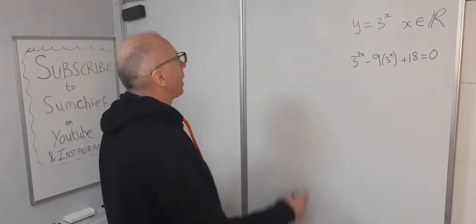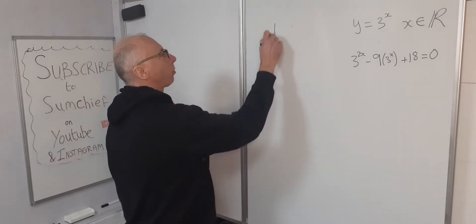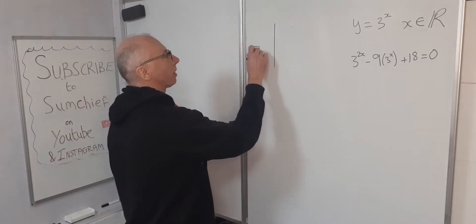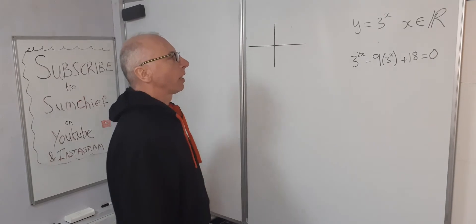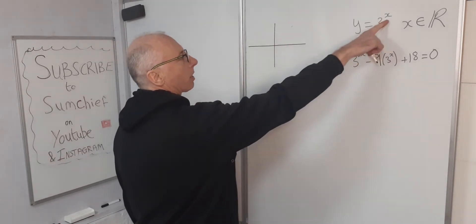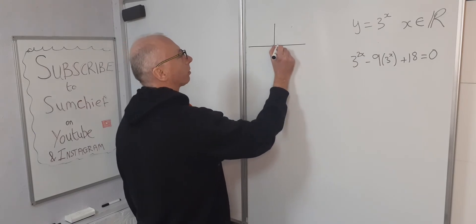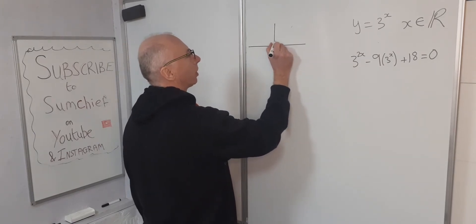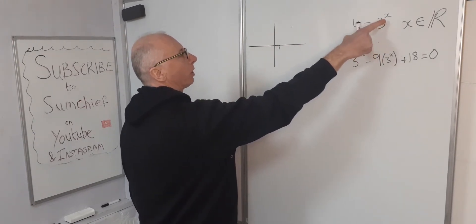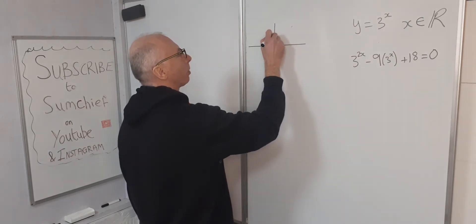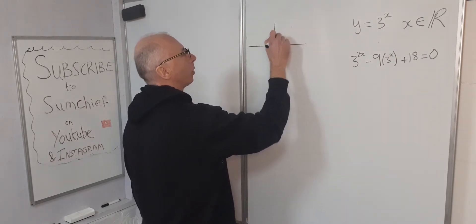The graph of y equals 3 to the power of x is going to behave something like this. So when x is 1, we know that y is 3. 3 to the power of 1 is 3. So let's put 3 here, so we know we've got a point here.